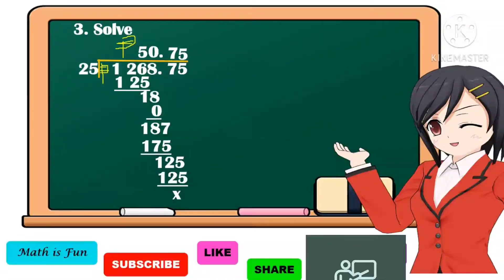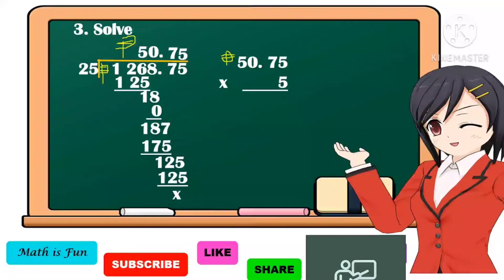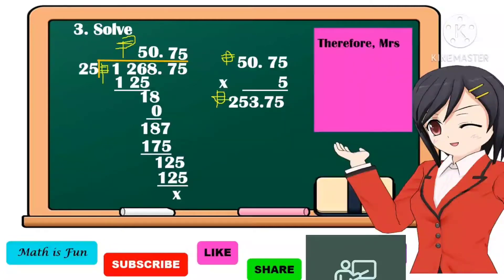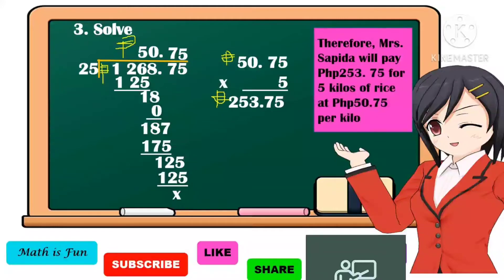Since Mrs. Zapida will buy 5 kilos, we're going to multiply 50 pesos and 75 centavos by 5. The product is 253 pesos and 75 centavos. Therefore, Mrs. Zapida will pay 253 pesos and 75 centavos for 5 kilos of rice at 50 pesos and 75 centavos per kilo.